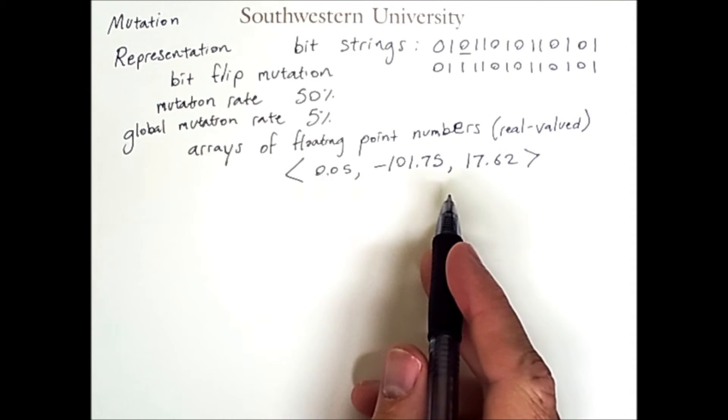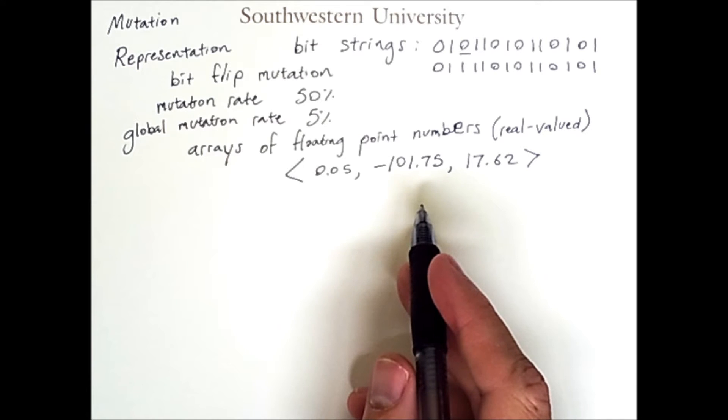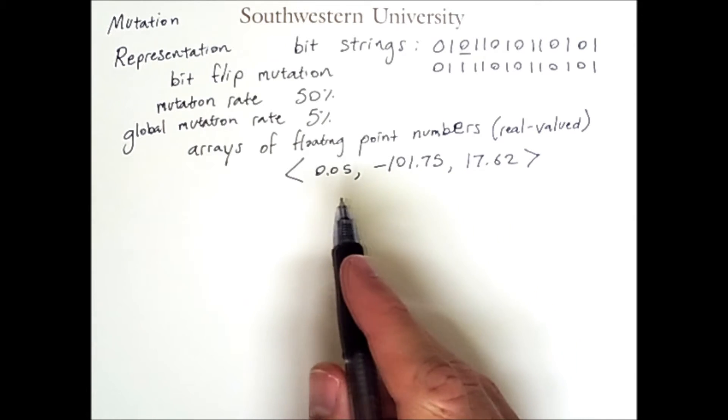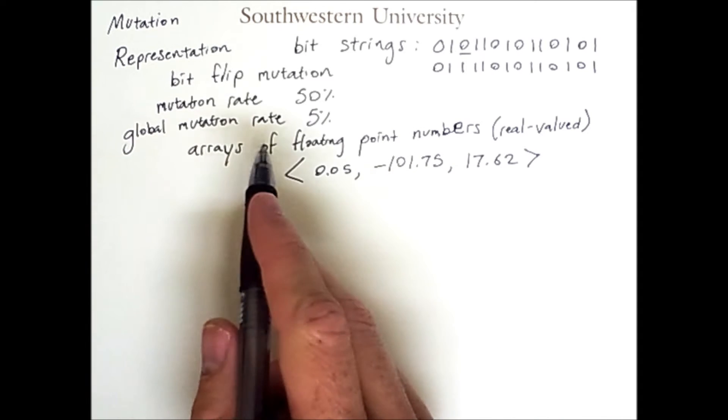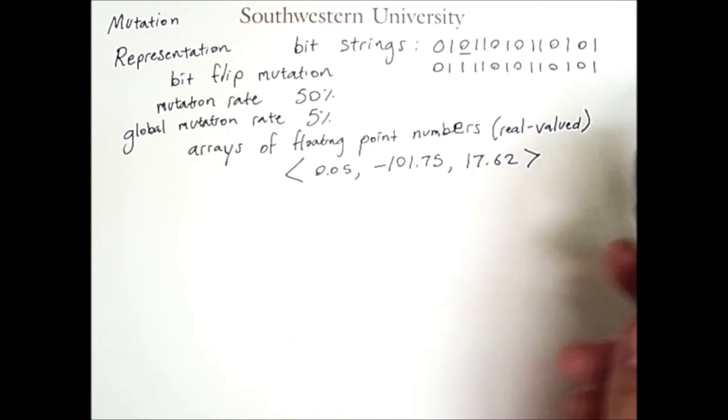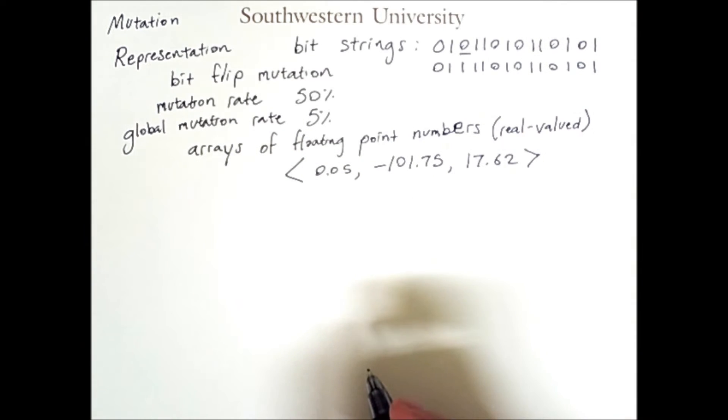In this representation, we have to consider whether or not we are mutating a single number or if we have a global mutation rate for each number, just as with the bitstrings. However, once we have chosen a number to modify via mutation, how do we do it?